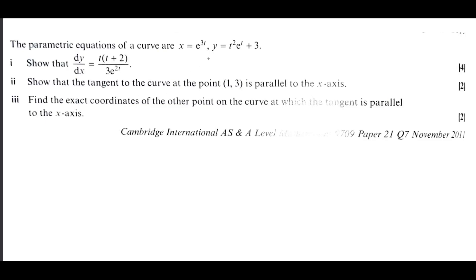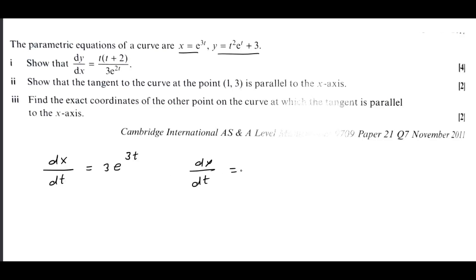Since it is a parametric equation, we differentiate x and y with respect to t. The derivative dx/dt: the function is e to the power 3t, so its derivative is e to the power 3t times the derivative of 3t, which is 3 — giving 3e to the power 3t. For dy/dt, we use the product rule: t squared times e to the power t plus e to the power t times 2t, which gives 2t e to the power t. The derivative of the constant 3 is 0.